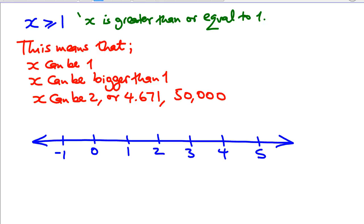What you can do is draw a full circle, filled in, shaded. What this full circle means is the values of X that you're stating here include 1. So it means including 1.